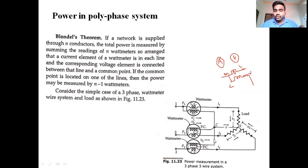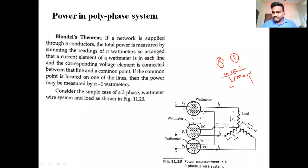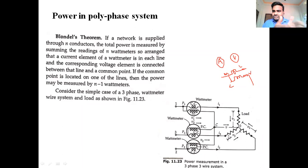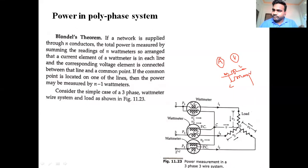If the common point is located on one of the lines, the power measured in the total circuit will be analyzed with respect to N minus 1 wattmeters. That is what Blondel's theorem states. In this network — a three-phase three-wire star connected load — each phase R, Y, B is connected with respect to an individual wattmeter.